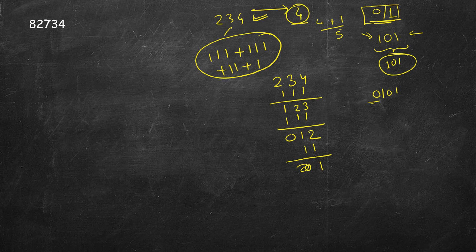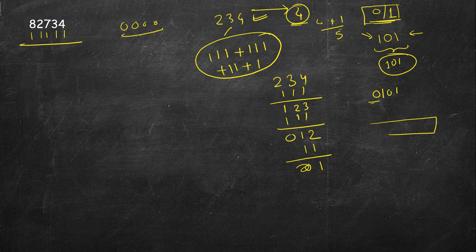Similarly, for 82734, we just subtract decimal values formed from 0s and 1s. Our goal is to quickly reach 00000. We want the minimum number of such values. The maximum would come from repeatedly adding 1, but since we want the minimum, we should subtract the maximum possible decibinary value at each step to reduce all digits to 0 as fast as possible.